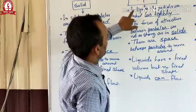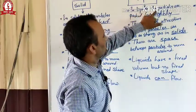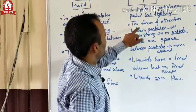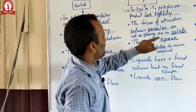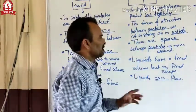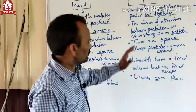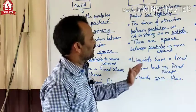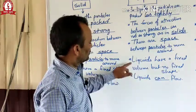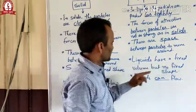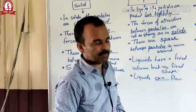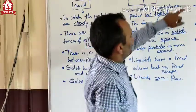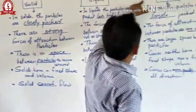In liquids, the particles are packed less tightly. The force of attraction between particles are not as strong as in solids. There are space between particles to move around. Liquids have a fixed volume but no fixed shape. And last, liquid can flow. The third state of matter is gas.